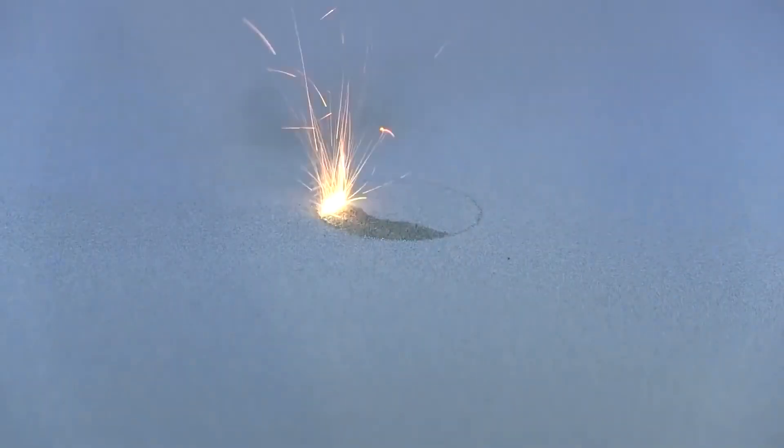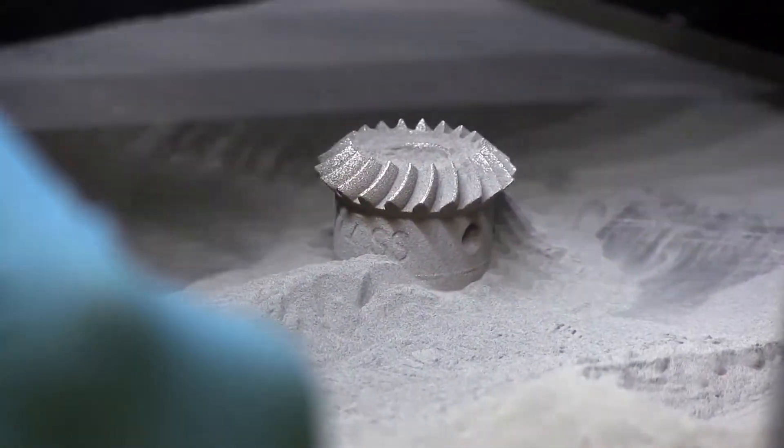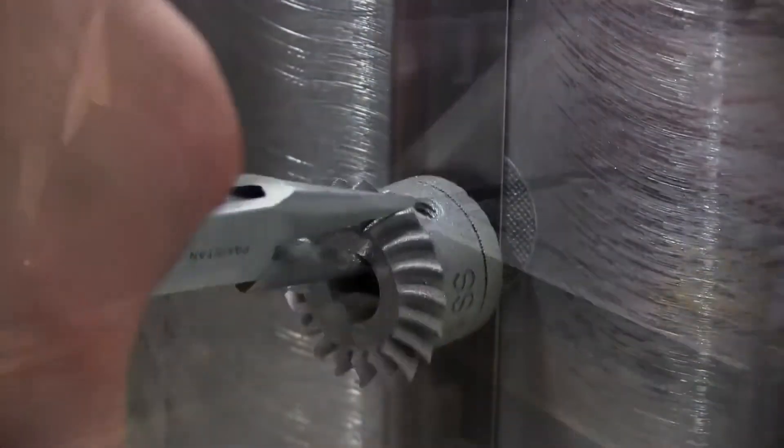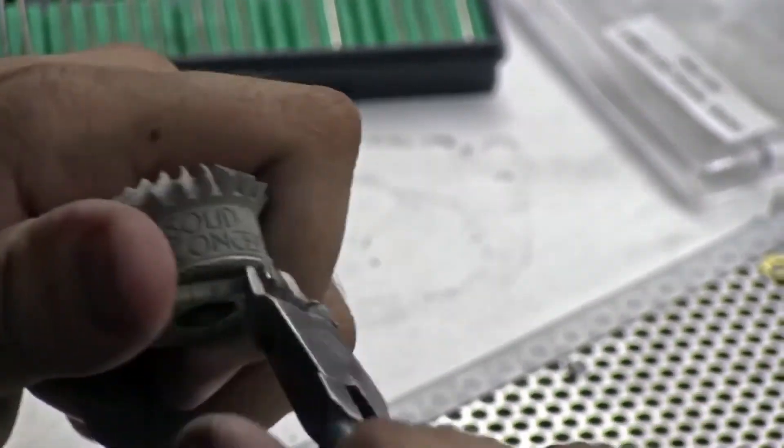The DMLS machine continues to sinter layer upon layer, building from the bottom up. As the part is built, support structures are added to give supplemental strength to fine features and overhanging surfaces. The completed part is then removed from the base plate and treated with an age-hardening heat process to further harden the part. Any support structures are also removed at this time.